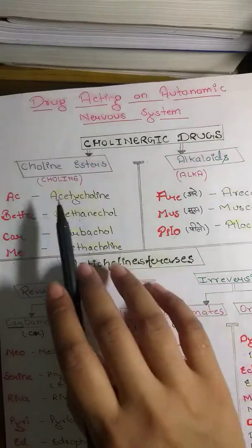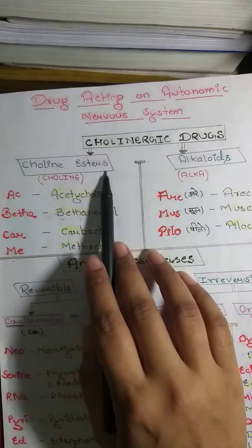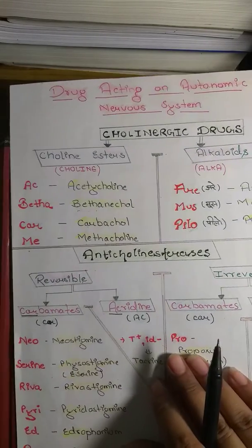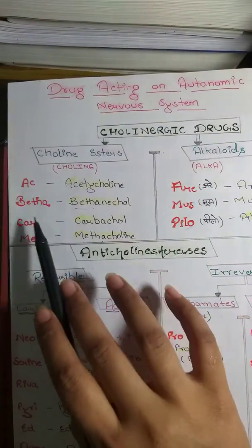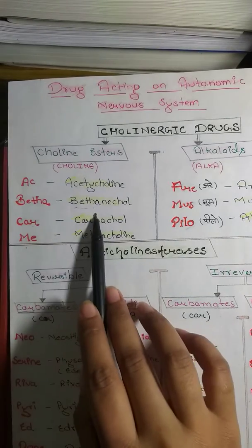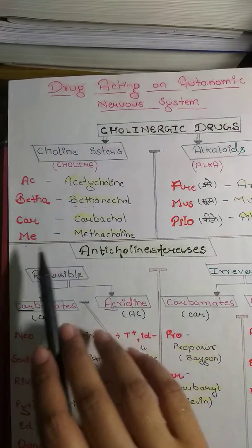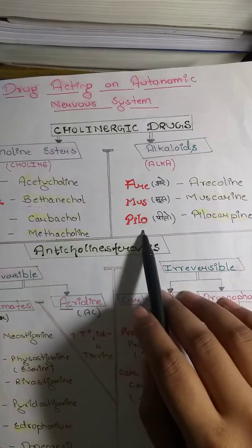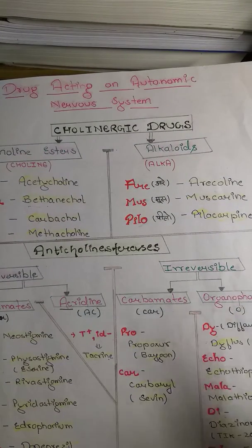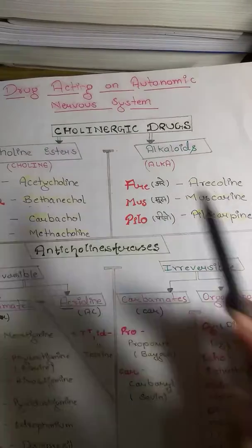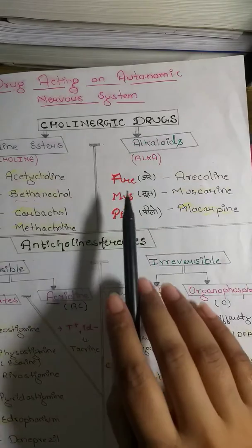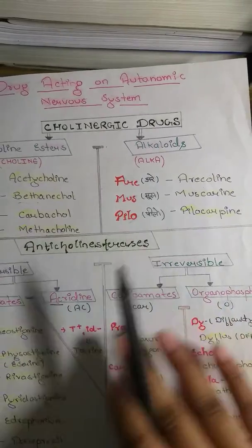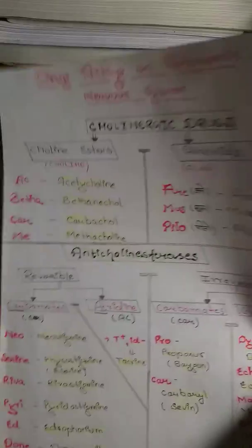Cholinergic drugs are divided into choline esters and alkaloids. Under the alkaloids we have: Arecoline, Muscarine, and Pilocarpine.